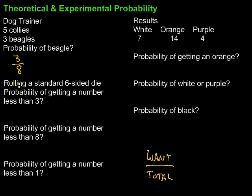Let's take a look at this next one. When rolling a standard six-sided die, what is the probability of getting a number less than three? How many numbers are less than three on a six-sided die? Let's see. One and two. So it would be two out of six possible outcomes. We can simplify that to one-third.